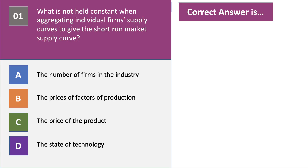Here's question 1. What is not held constant when aggregating individual firm supply curves to give the short-run market supply curve? Please press the pause button and have a go at question 1.